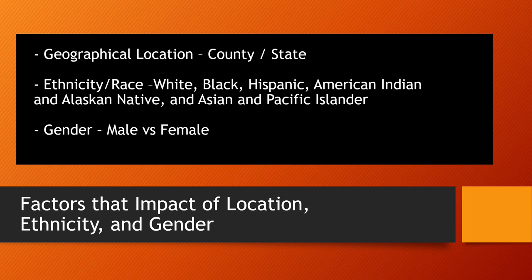First, geographical location — we'll examine whether heart disease death rates differ depending on where people live. Second, ethnicity — we'll analyze how belonging to different ethnic groups affects the likelihood of dying from heart disease. Third, gender — we'll explore whether being male or female influences the risk of death from heart disease. Understanding how these factors interact can help us identify patterns and develop strategies to reduce the risk and improve overall health outcomes.